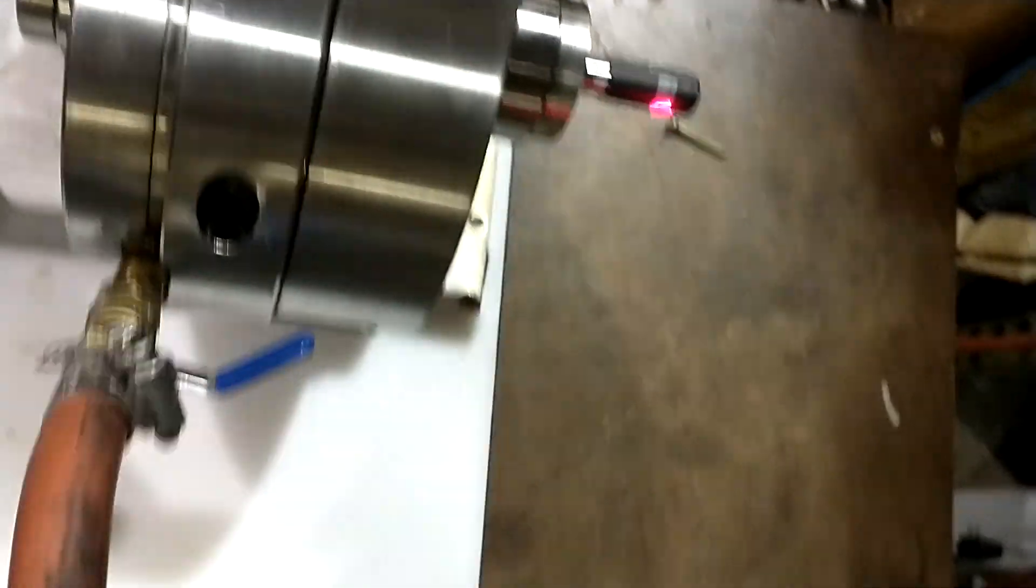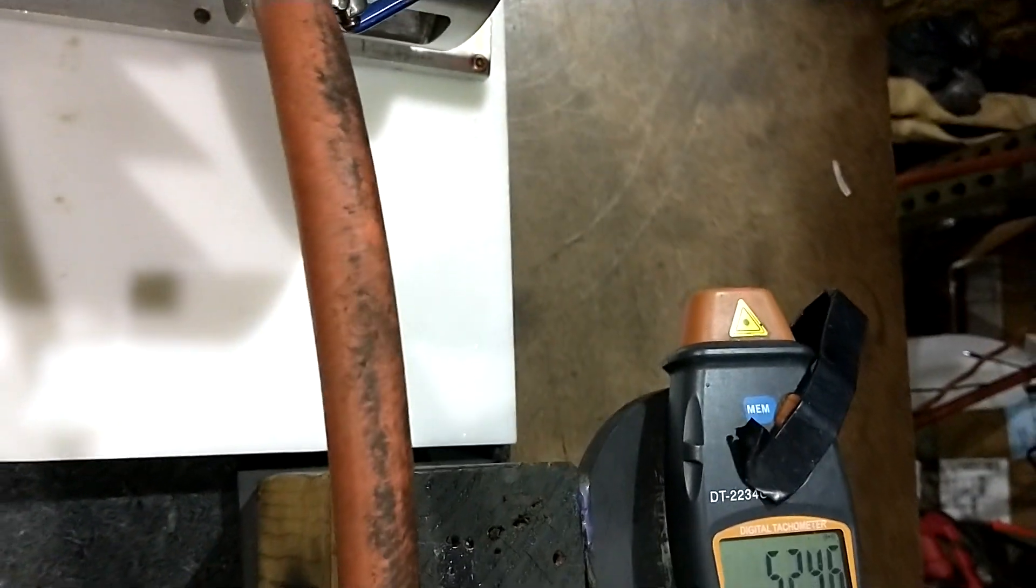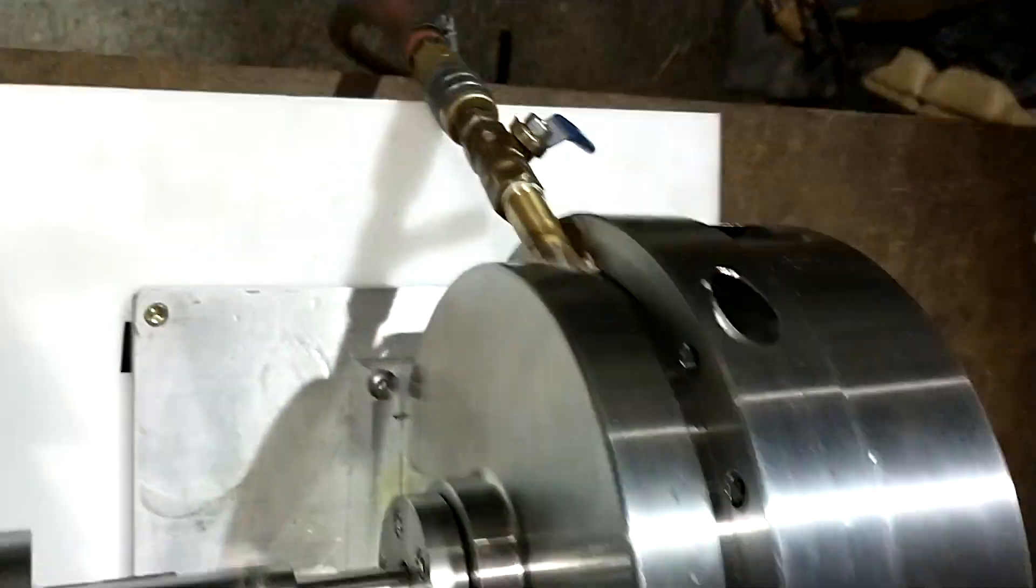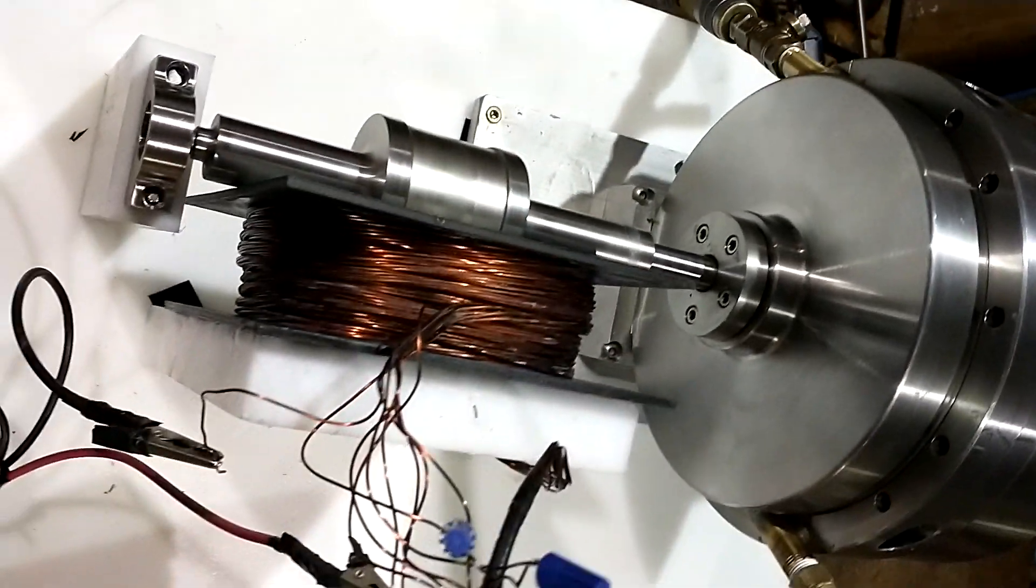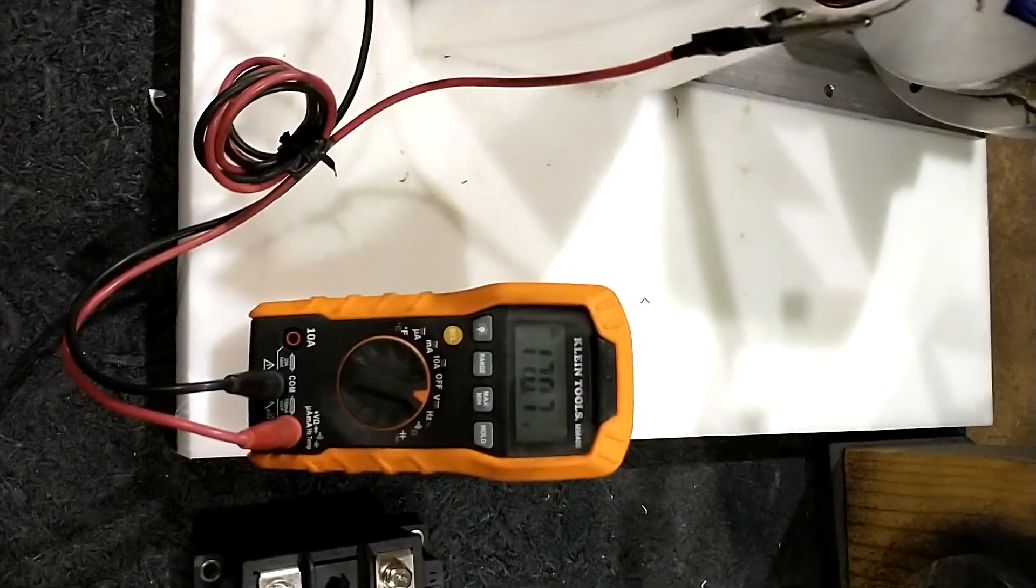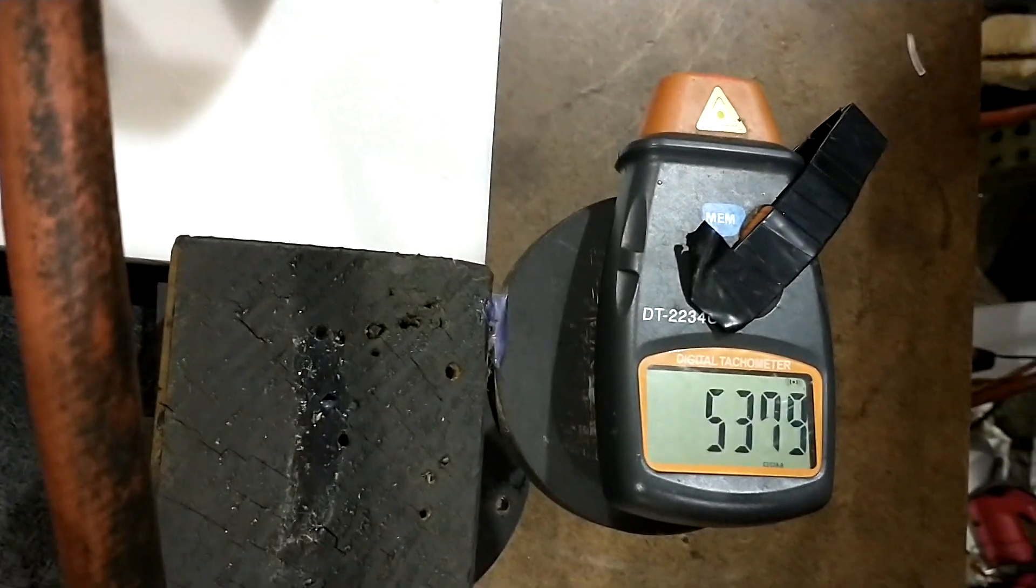So we're not drawing any power yet. I had to throttle down the throttle there, even though this nozzle is really small. We got 170 volts, 171 volts, 5,300 RPM.